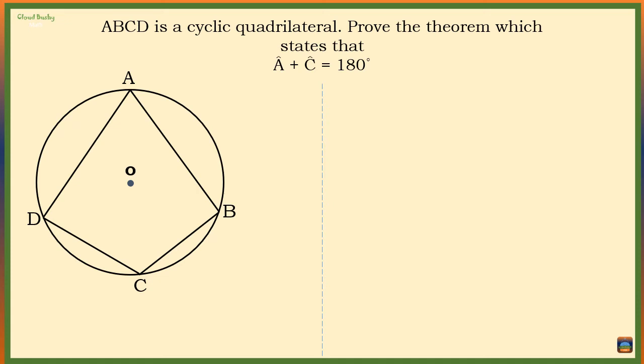We are given a diagram with a cyclic quadrilateral ABCD. We want to prove that angle A plus angle C equals 180 degrees. This is a circle theorem which states that the opposite angles of a cyclic quadrilateral are supplementary.